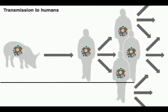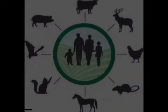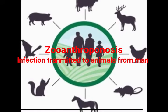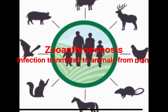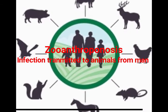Types of zoonosis: Anthropozoonosis refers to infections transmitted to men from lower vertebrate animals. Zoanthropozoonosis refers to infections transmitted to animals from men.